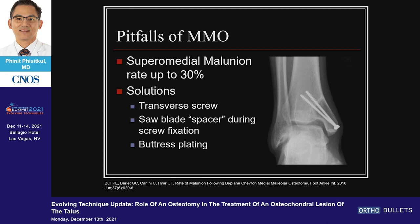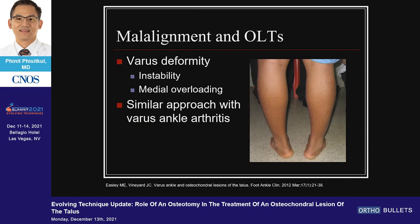Make sure you avoid supramedial malunion. Whatever medial osteotomy you do, it can be up to 30%. The key is to pre-drill it with a transverse hole — don't pre-drill with an oblique hole. Otherwise, losing the volume of the bone, you compress it back down and it will translate proximally. Some people recommend using a spacer saw blade up to the top part of the osteotomy, or you can use buttress plating to cut against compression.